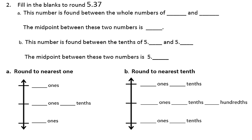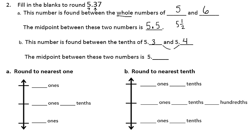Let's look at another example. This time our number is 5 and 37 hundredths. The number falls between the whole numbers of 5 and 6, and the midpoint between 5 and 6 is 5 and 1 half, or as a decimal, 5 and 5 tenths. This number also falls between the tenths of 5 wholes and 3 tenths, and 5 wholes and 4 tenths. The midpoint between these two numbers would be 5 wholes, 3 tenths, and 5 hundredths.